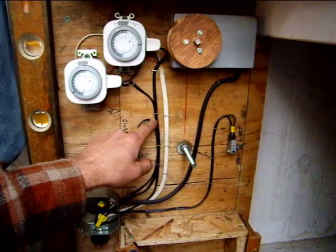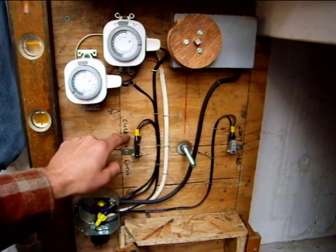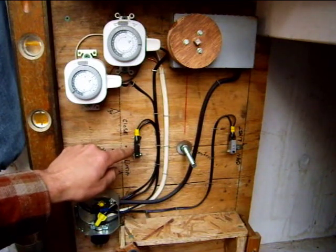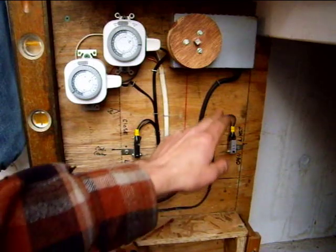One leg of the wire comes down through into the box, back up into the switch. Same leg of the wire, back out of the switch, and then up to the motor.